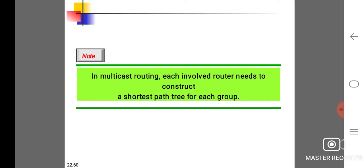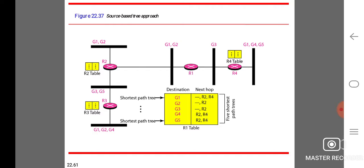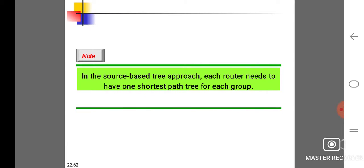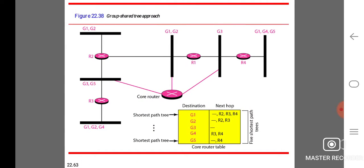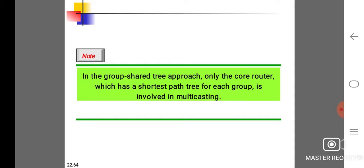In multicast routing, each involved router needs to construct a shortest path tree for each group. In the source-based tree approach, each router needs to have one shortest path tree for each group. In the group-shared approach, only the core router, which has a shortest path tree for each group, is involved in multicasting.